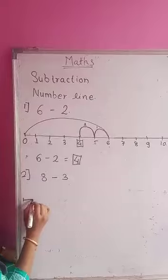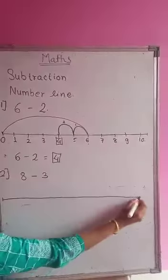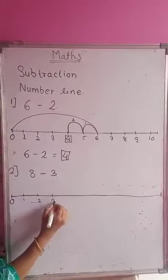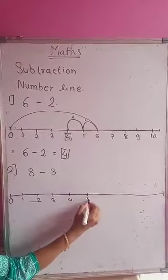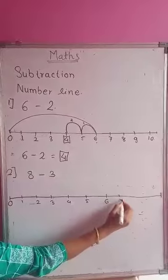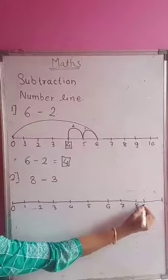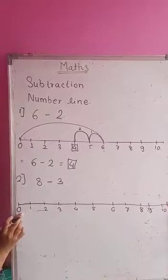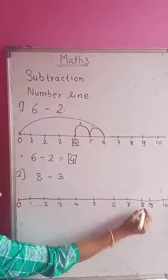8 minus 3 means we have to subtract 3 from 8. Let's draw a number line starting from 0, 1, 2, 3, 4, 5, 6, 7, 8, 9, and 10. Let's find out the bigger number. The bigger number is 8.